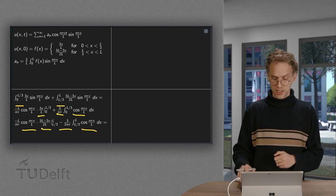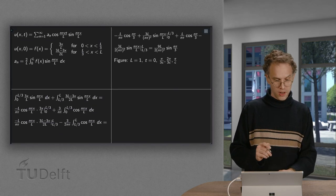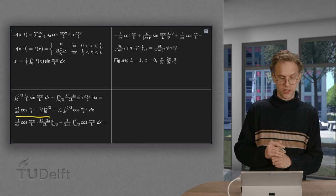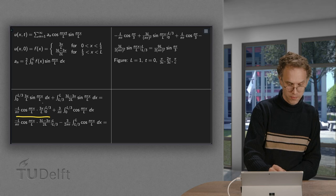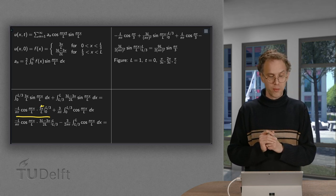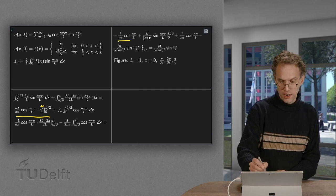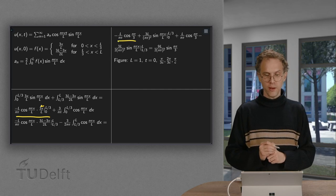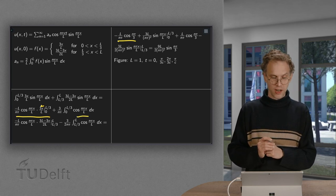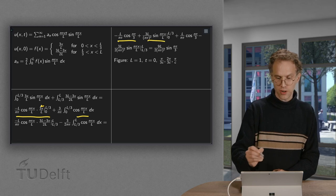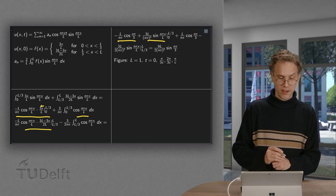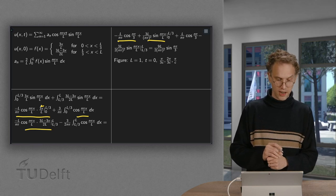And now we just have to do one more integration and plug in some boundary values. So the boundary values of this one, the lower boundary gives us a 0 due to the x over there. And the upper boundary gives the 3x over L becomes 1. So we just have a minus L over n pi times cosine n pi over 3. Then we have to integrate the cosine again, which gives us a sine times L over n pi. So that's this term. Plus the boundary points over here. The boundary at L gives us 0, and the boundary at L over 3 gives us a 1.